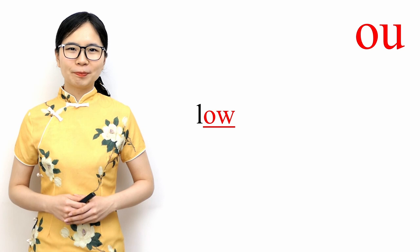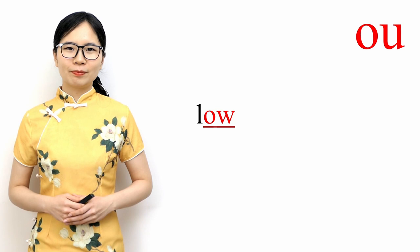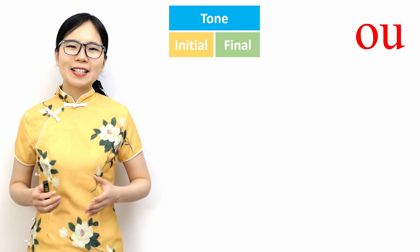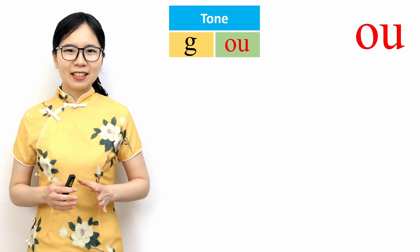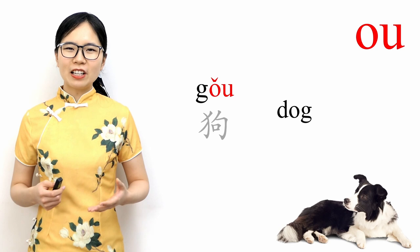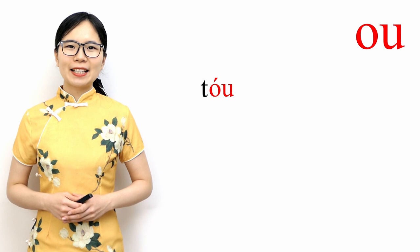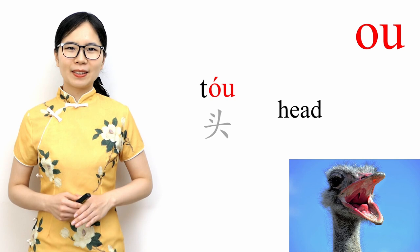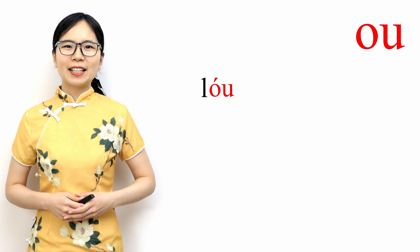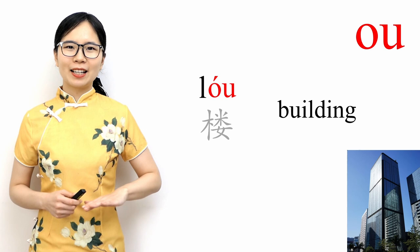We'll start with 'o'. It's pronounced like the 'ow' in the word 'low'. Please repeat after me: 'o'. Let's take a look at some example words that use the final 'o'. If I use the initial 'g' and the third tone, then I get the word 'gǒu', which means dog. Switching to the initial 't' and the second tone, we get 'tóu', which means head. And changing to the initial 'l', we get 'lóu', which means building.